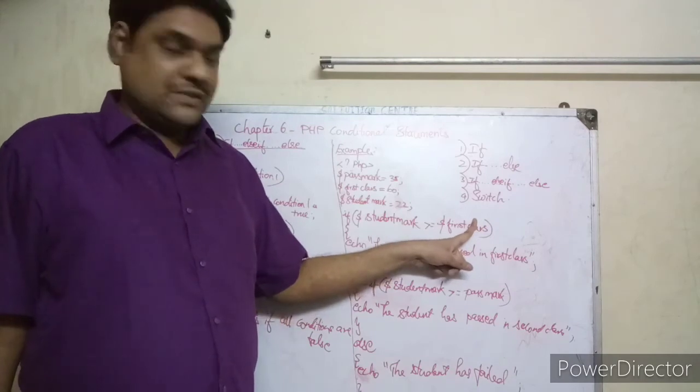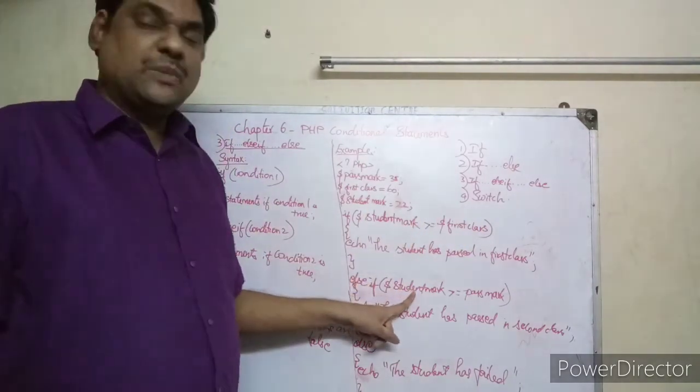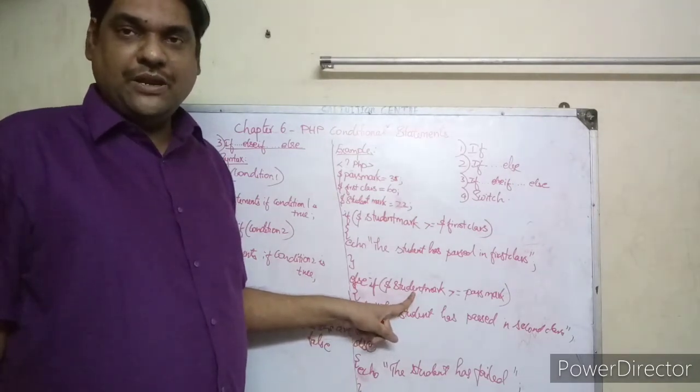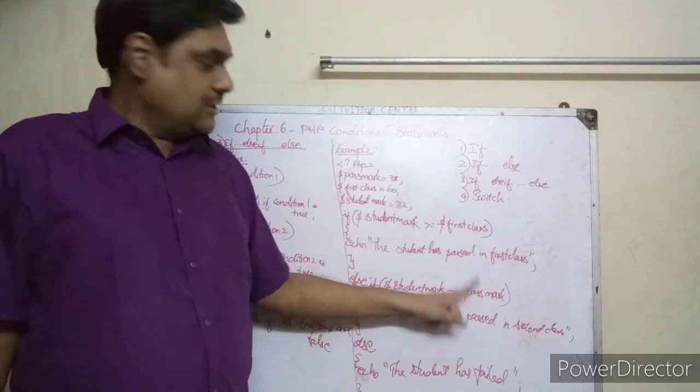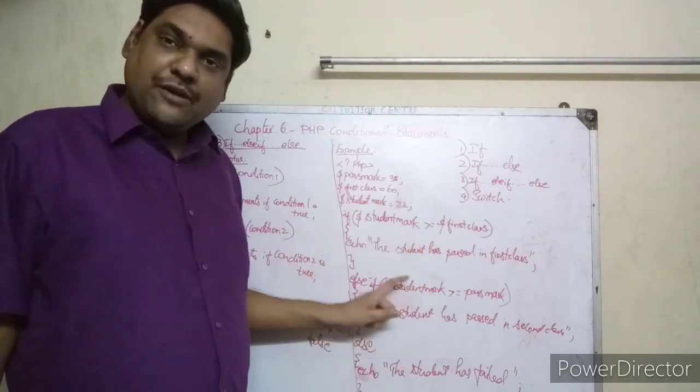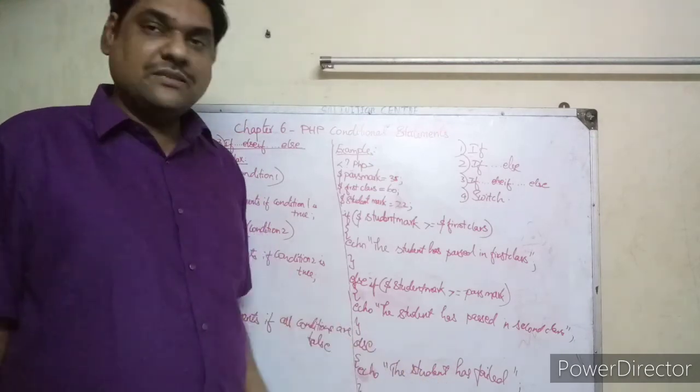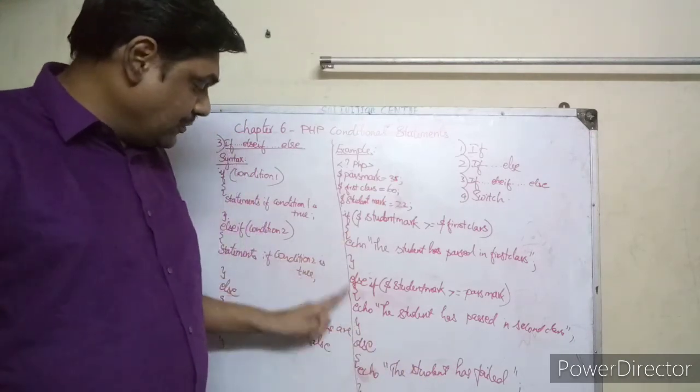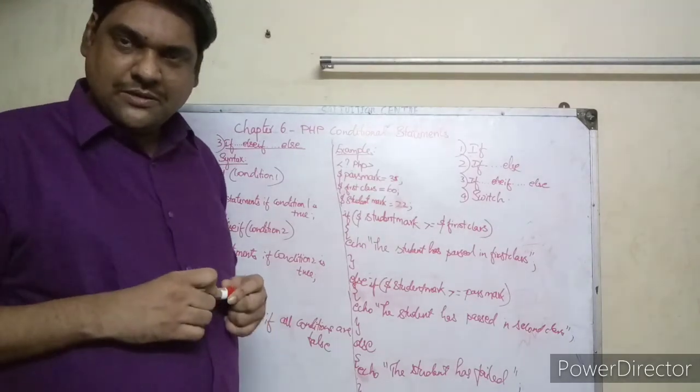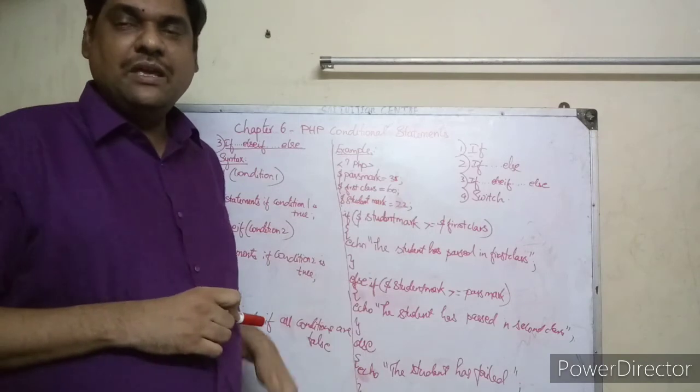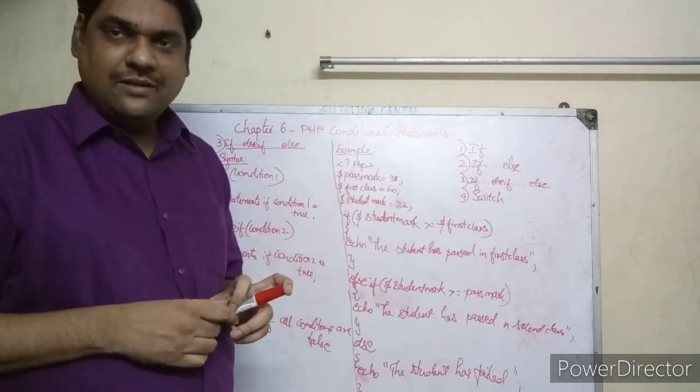Suppose student mark is 22. Is 22 greater than 35? Again false. So it will go to else. The student has failed. So only one part will execute, not all parts. Got it, mighty children? So this is the working of if-else-if-ladder. Okay children, thank you.